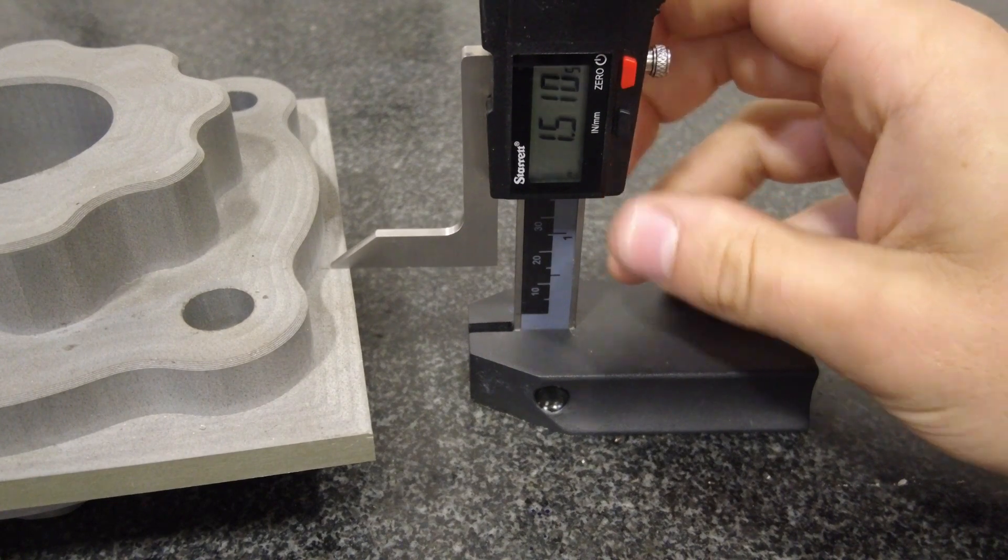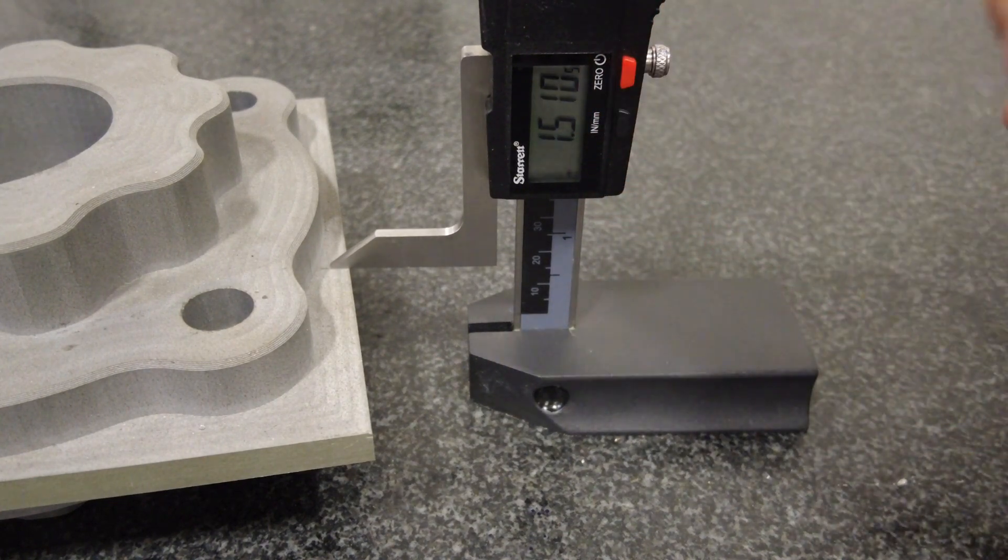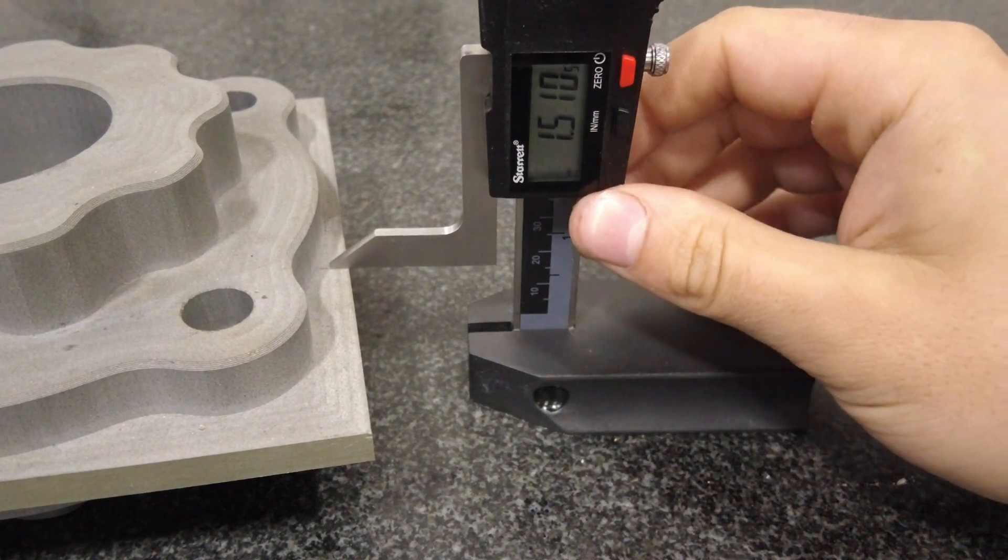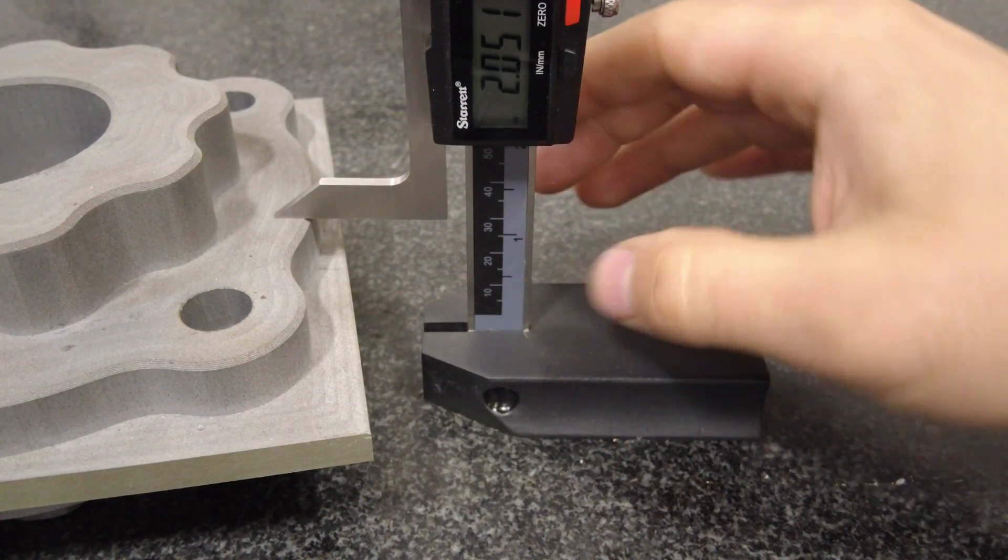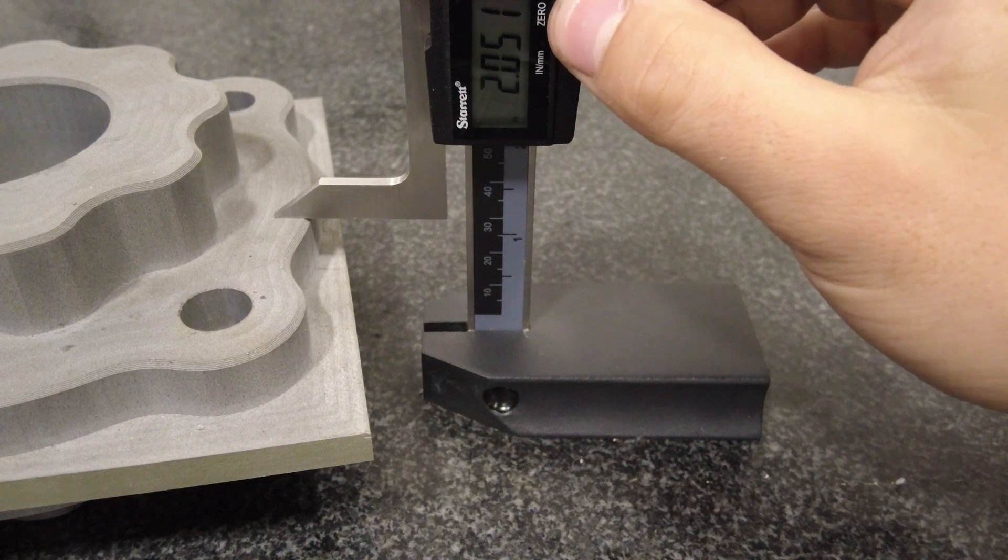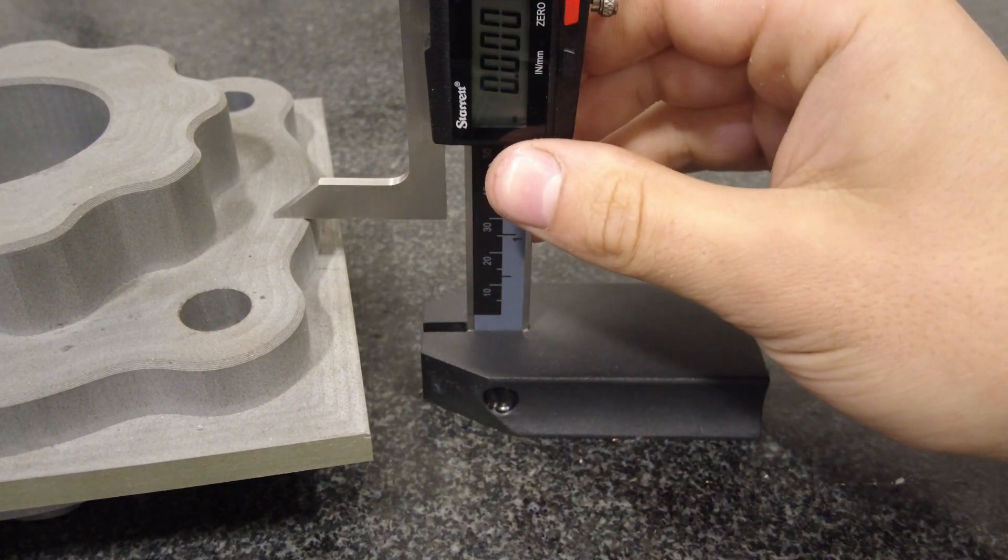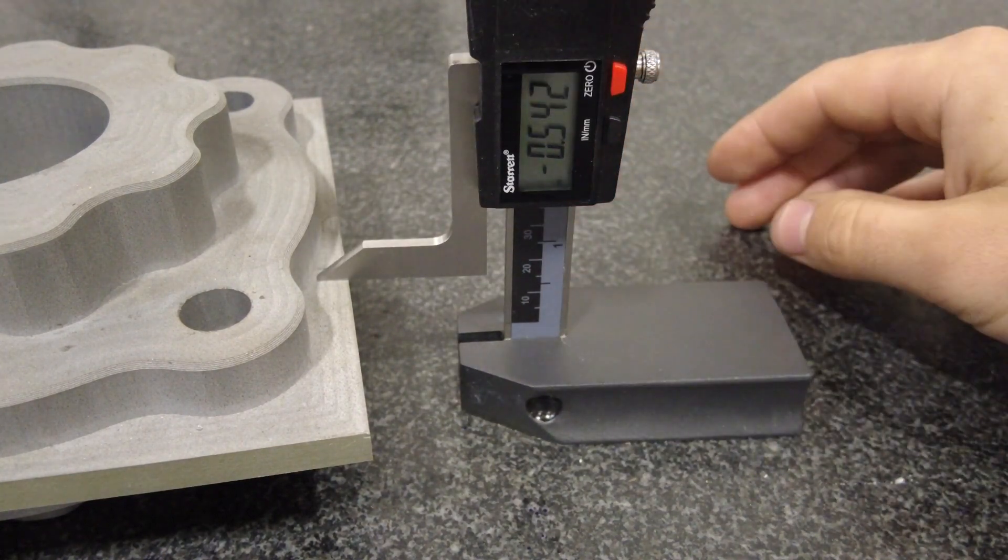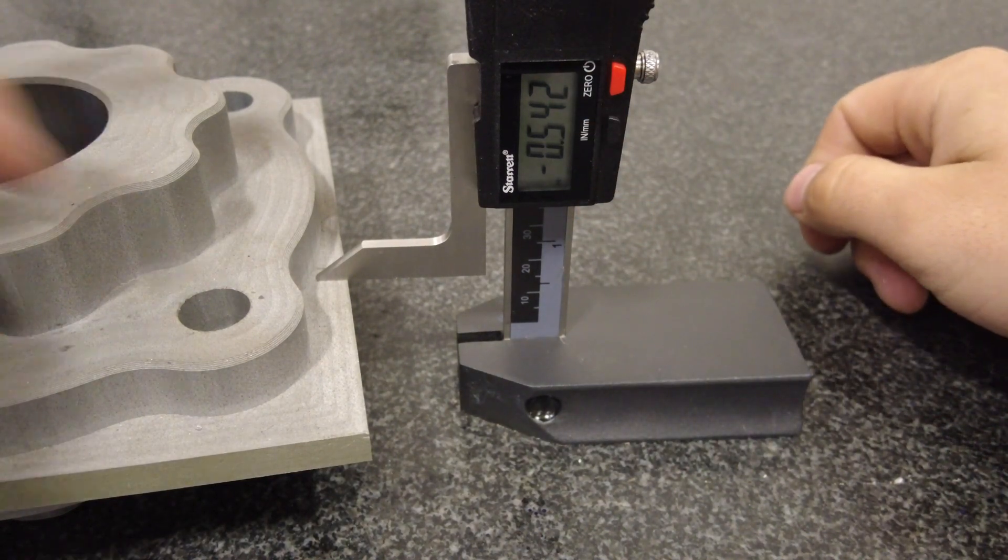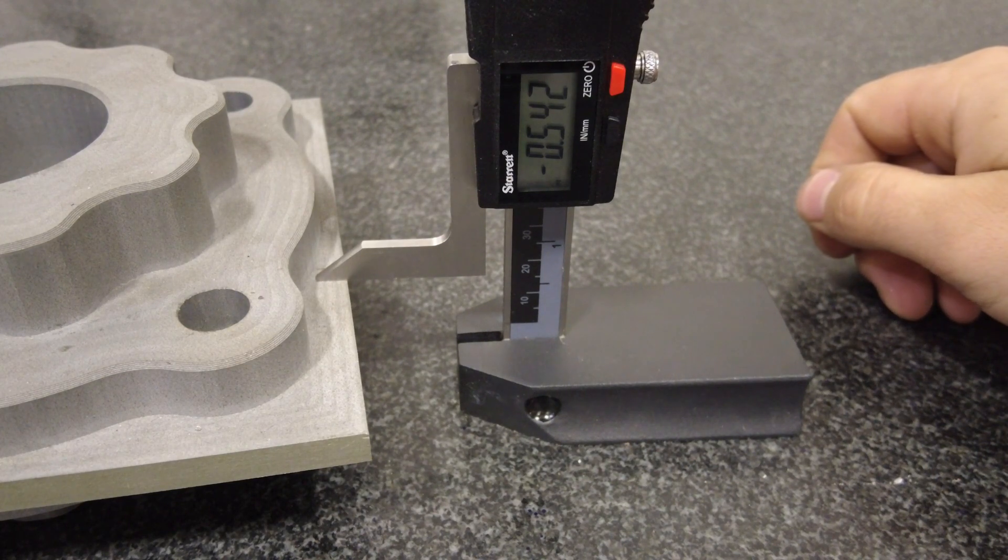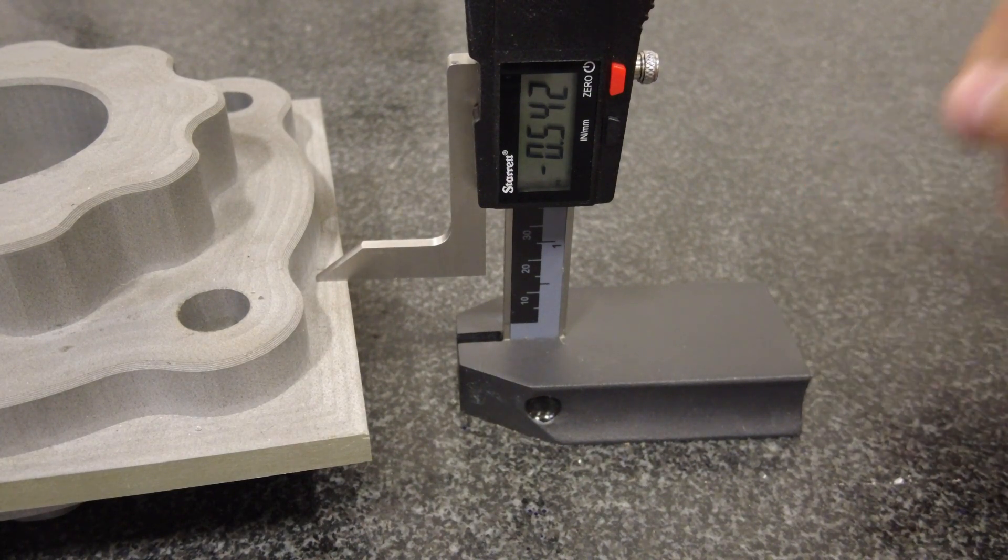Now we can check our first measurement here, 1.510, easy enough to read. We can check this measurement here, 2.051. If we want to check the difference between them, we can zero it out, bring this down to there, and we can see 0.542 is the difference between them. That's the height from here to here, and that's how to read a digital height gauge.